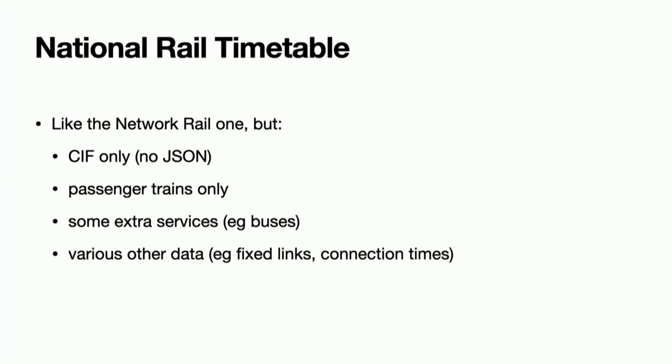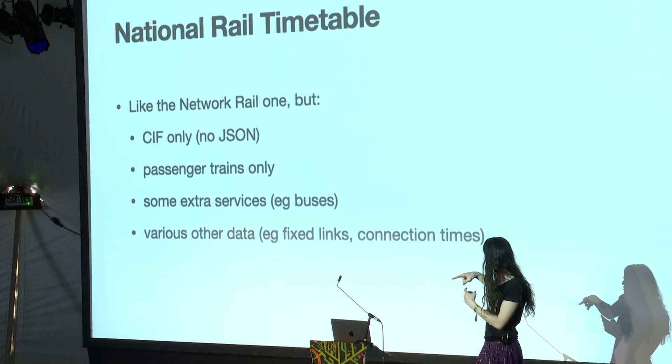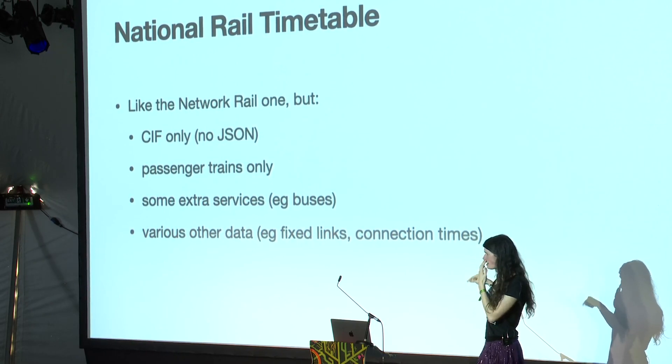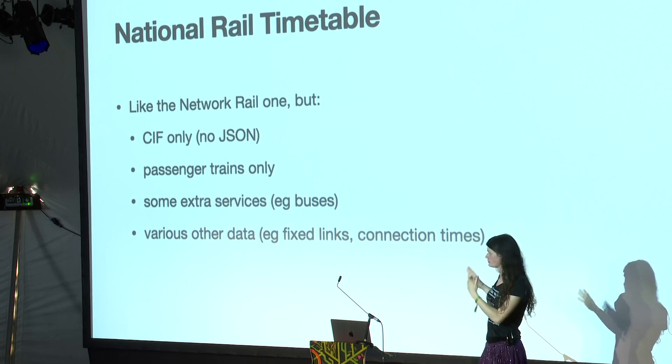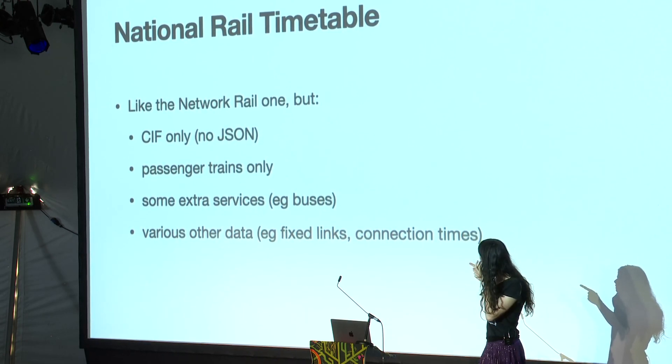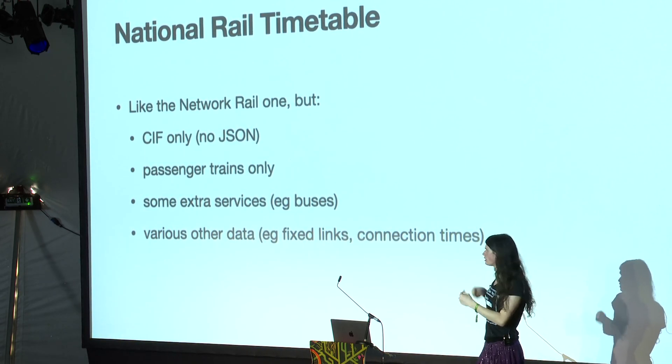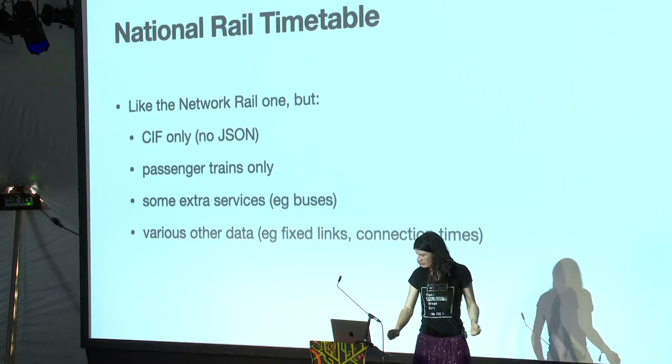There's also a different timetable published by the Rail Delivery Group, who call themselves National Rail — the association of all the passenger train companies. It's roughly the same format, but it only has passenger trains, no freight, and it also has some extra stuff. For instance, they've added some buses that show up in the train timetable that you can use train tickets on. There's also fixed links, where if there are two stations you're allowed to walk between as part of a train journey — like across Glasgow or taking the tube across London — the data for all of those is included. There's also data on how long you have to allow for a connection at a given station. If you're wanting to look at possible passenger journeys, this is the data you'd want.